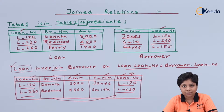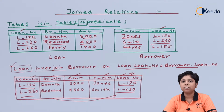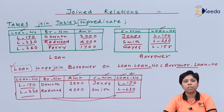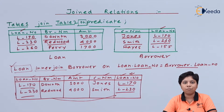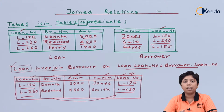When we outer join, all the attributes and values of the left, right, or both relations will be included depending on the type. There are three types of outer join: left outer join, right outer join, and full outer join. We will discuss each with examples.